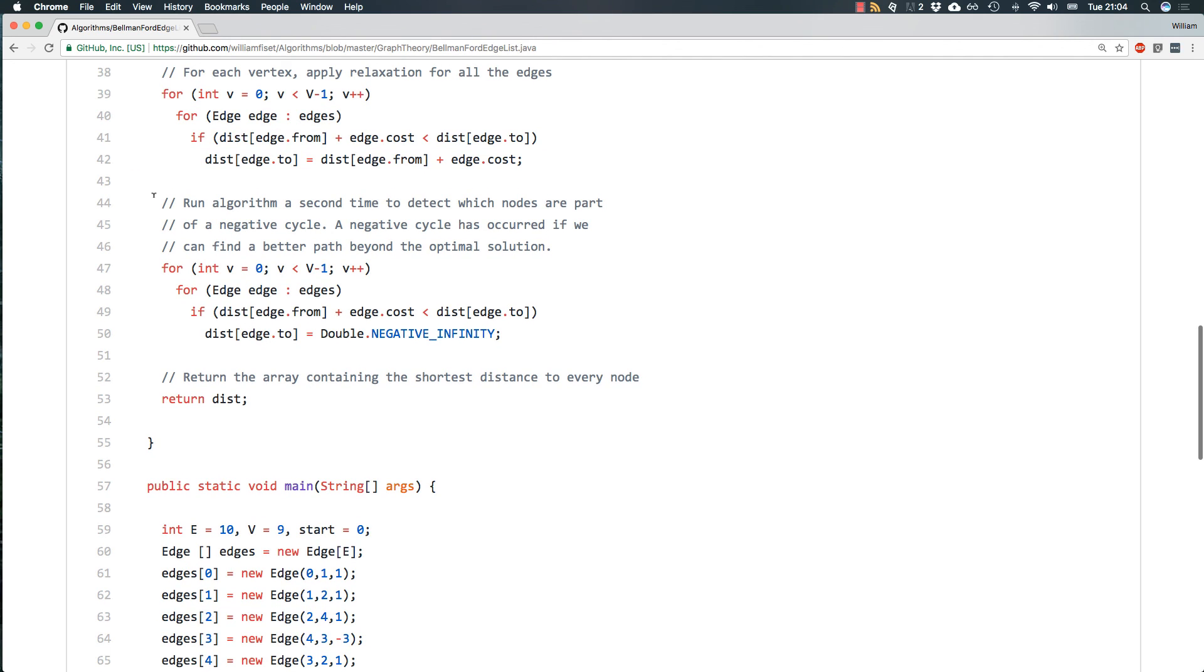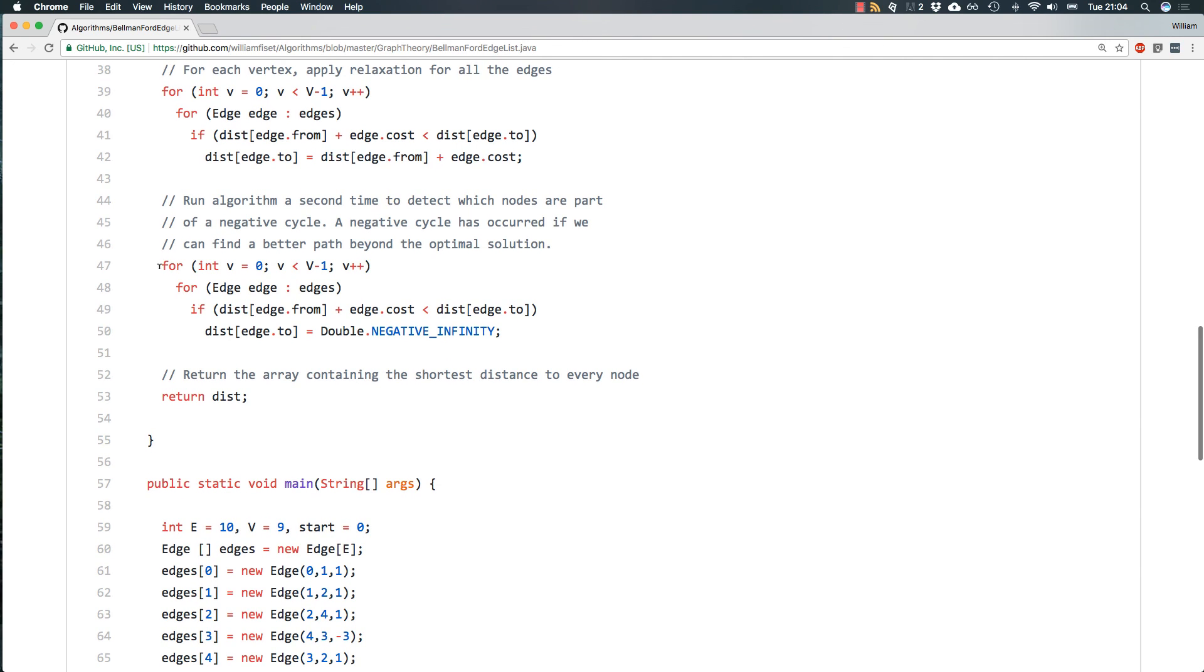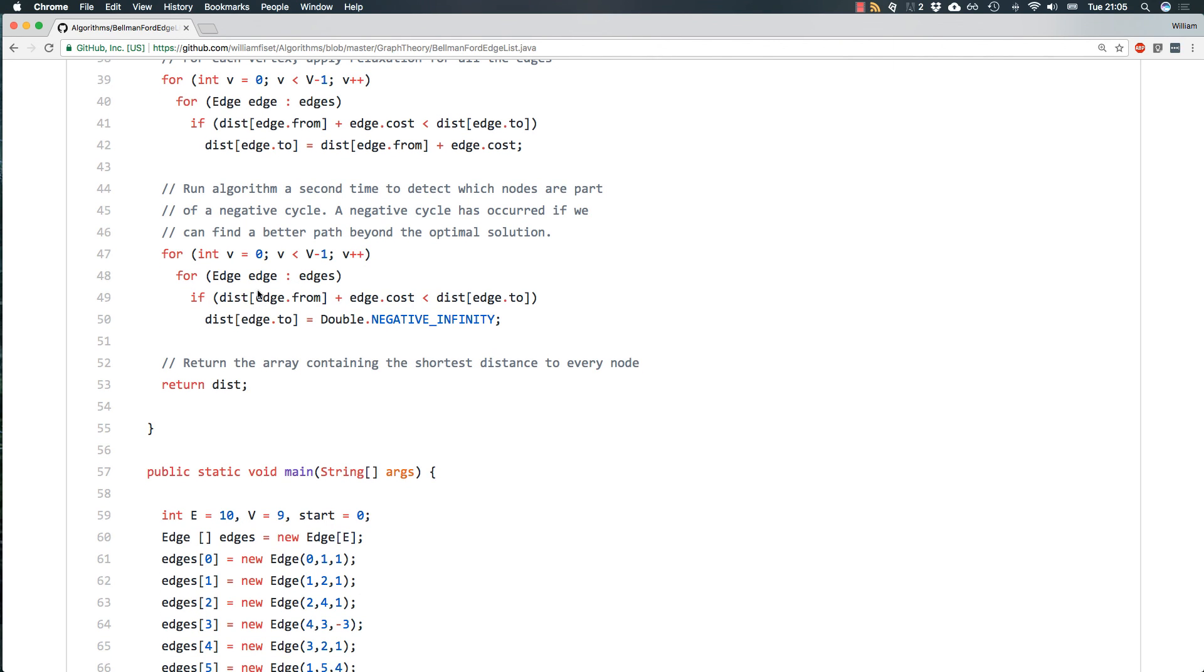Now this second pass of the algorithm is to detect negative cycles. So run the algorithm a second time. So loop V minus 1 times, for each edge, relax the edge. But this time, instead of updating the edge to a better value, we set the value to double.NEGATIVE_INFINITY. And this is a special value defined in Java that represents negative infinity. And no matter what value you add to double.NEGATIVE_INFINITY, it will still be negative infinity. Unless you add double.POSITIVE_INFINITY, then I think it gives you double.NaN or something like that.